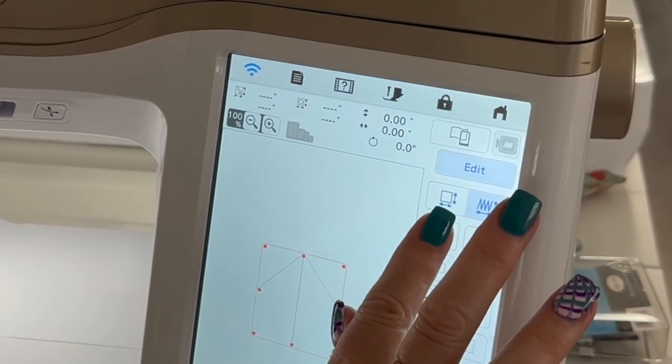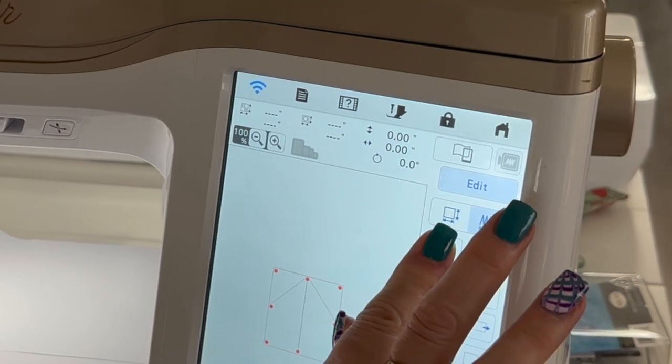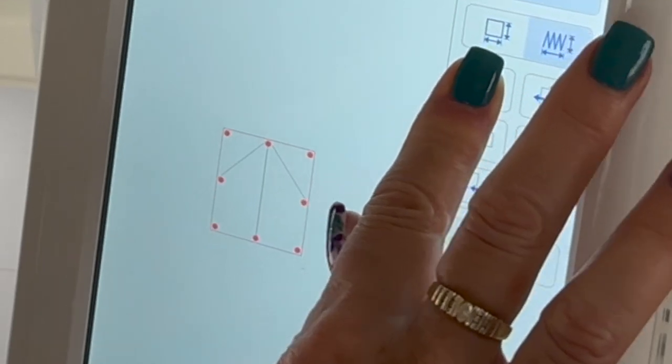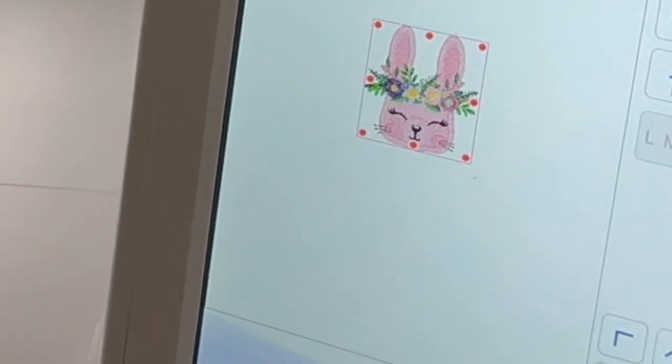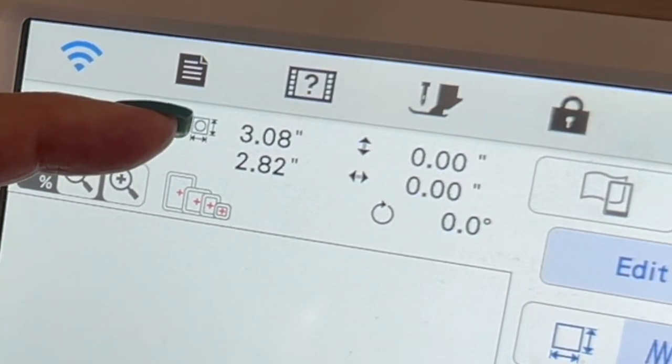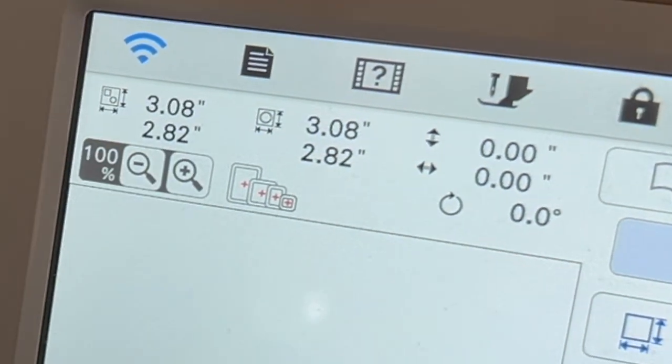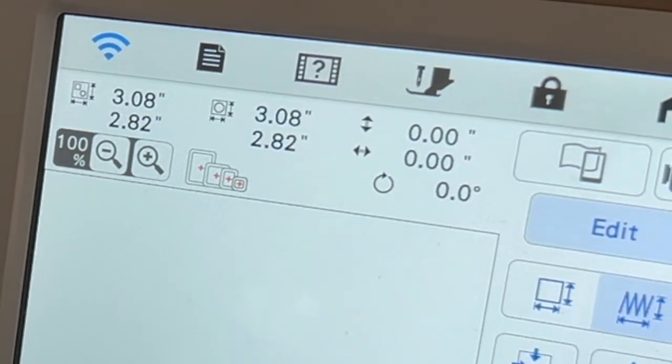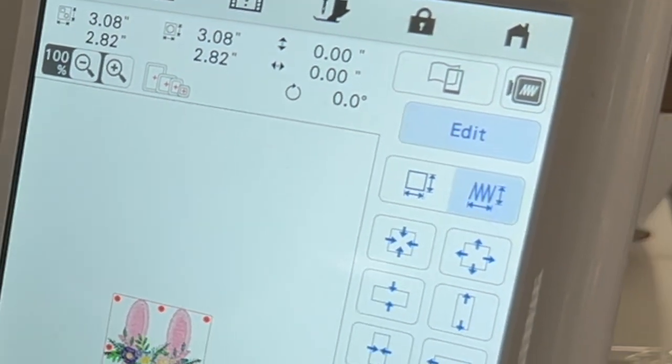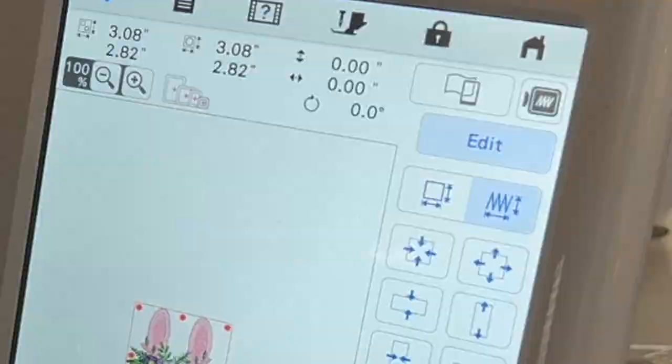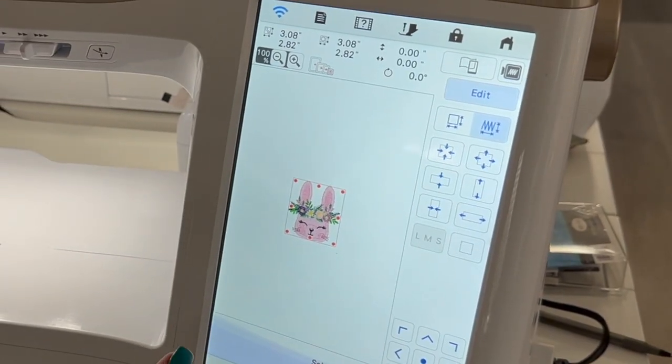And we can either use the button here which is going down down down and at this we're at three by two and a half. So it did bring it down quite a bit which is approximately about 60%.